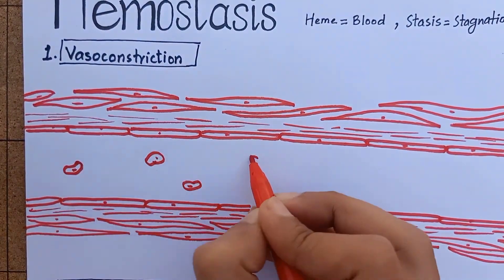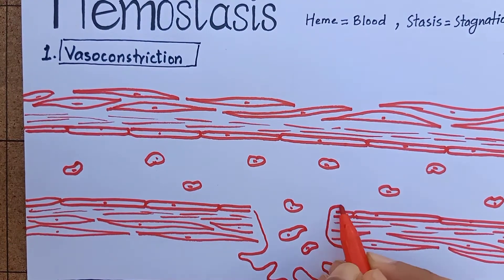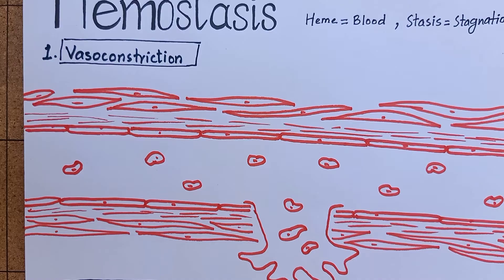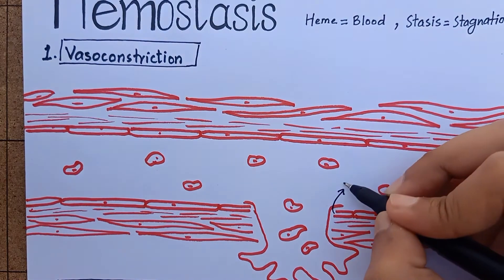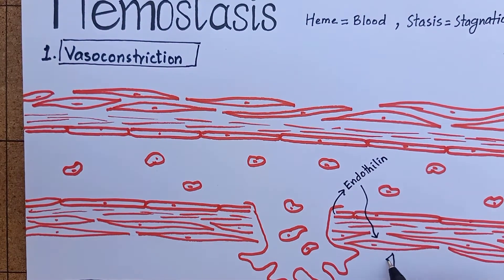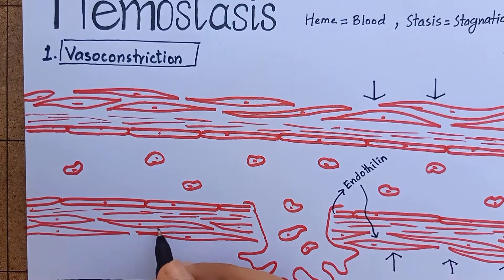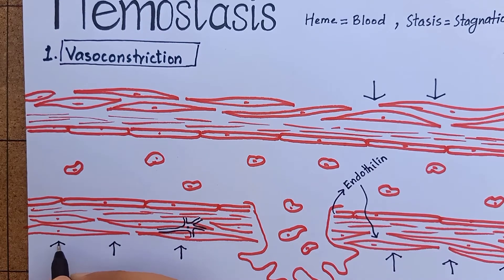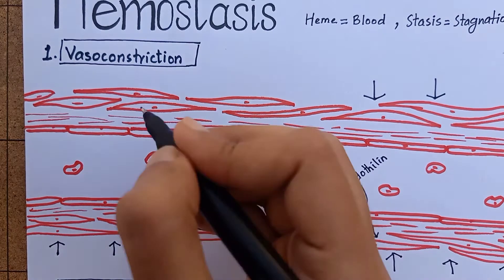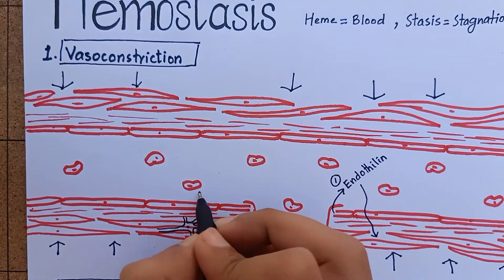As the blood is flowing through the vessel, it will start to bleed from the injured site. To prevent blood loss, the vascular smooth muscles will contract by three mechanisms to cause vasoconstriction. First, the ruptured endothelial cells release a substance called endothelin, a powerful vasoconstrictor. Second, nerve reflexes are initiated by pain from the traumatized vessel. Third, local myogenic spasm occurs as a direct response to injury.